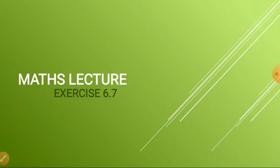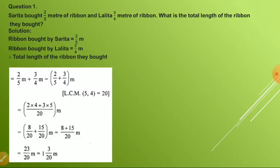Question number one: Sarita bought 2/5 meter of ribbon and Lelita bought 3/4 meter of ribbon. What is the total length of ribbon they bought? Ribbon bought by Sarita is 2/5 meter and ribbon bought by Lelita is 3/4 meter.